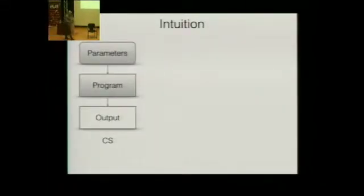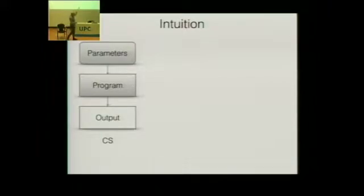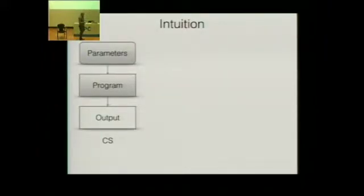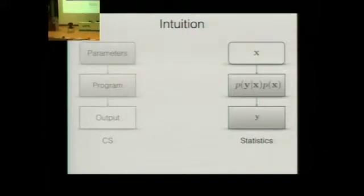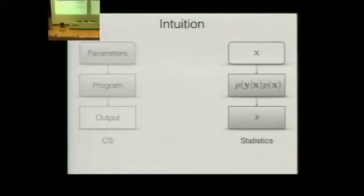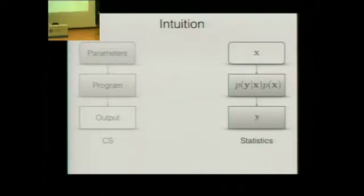Intuitively, in computer science we write programs that have some free variables or parameters whose values are provided, then we execute the program to produce some output. In statistics, we have some data Y that we're interested in, and we'd like to model the data and say something about latent parameters or latent variables X of interest.